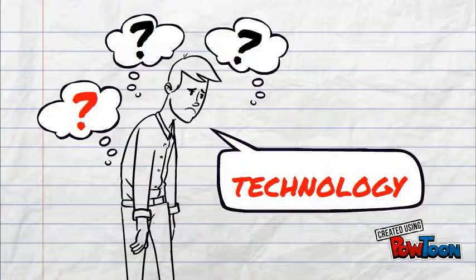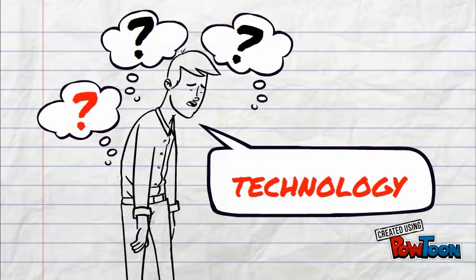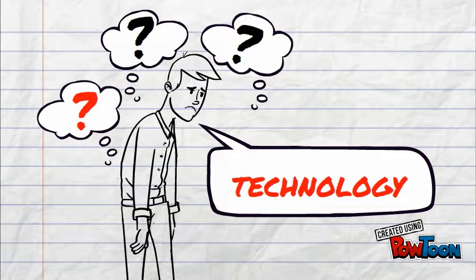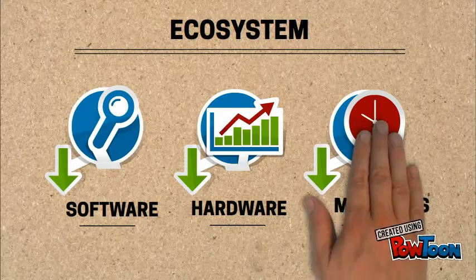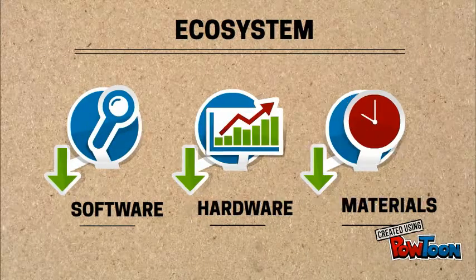However, the target market category is primarily retirees who may be skeptical over technology or do not possess the amount of technical knowledge to operate the process, as the 4DP is an ecosystem of software, hardware and materials that all have to work together.